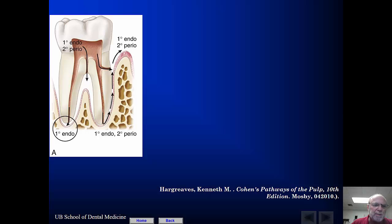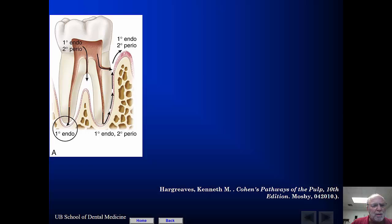Looking at this graphically, when you have primary endodontic disease, you may or may not have drainage through the lateral canal — and in reality, you just don't see this that often clinically. When you have necrosis — and you can only have this with complete necrosis of the canal — you're going to have the development of periradicular lesions and possibly an acute alveolar abscess.